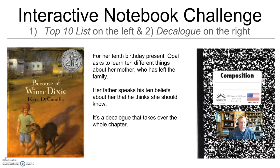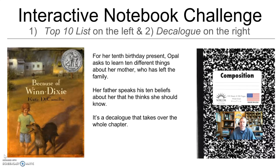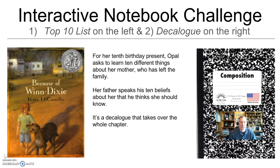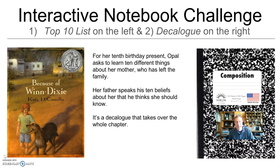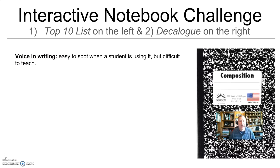One of my favorite books is Because of Winn-Dixie, and I love the chapter where Opal asks her dad to tell her 10 things about her mama since she's never met her. The whole chapter starts with 'one' and he just tells her 10 memorable things for her to know. It's a beautiful way to introduce the idea of a decalogue — if you're looking to teach it rather than simply assign it. That's one suggestion I have for you.